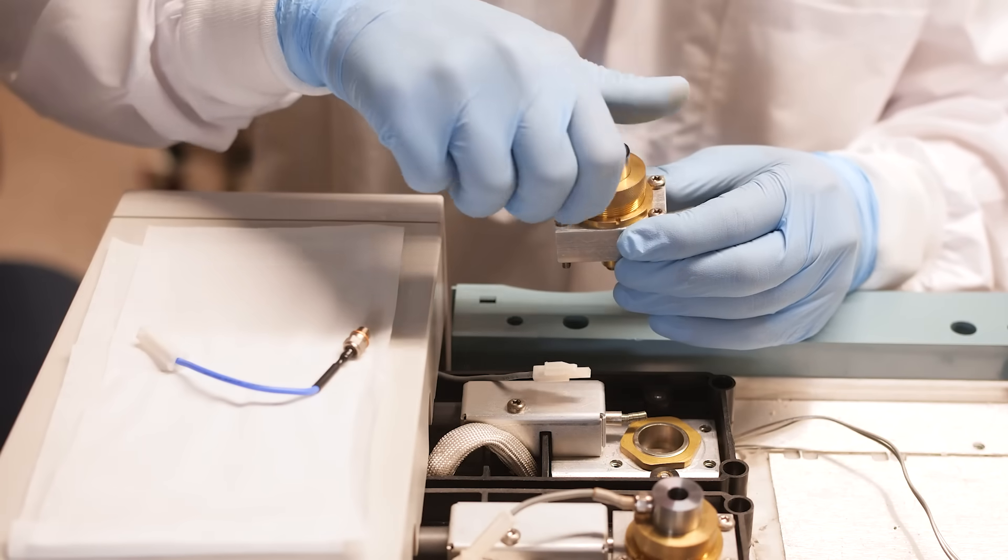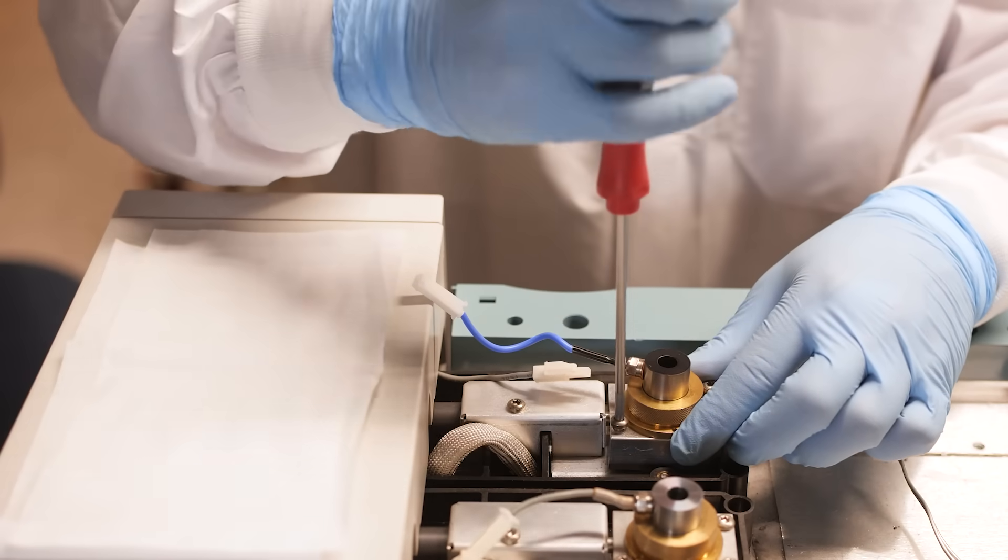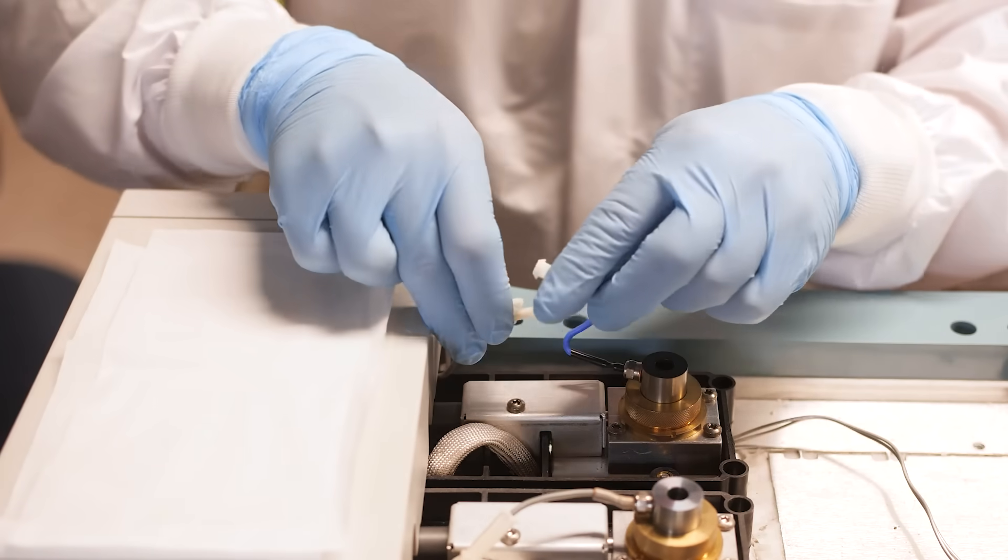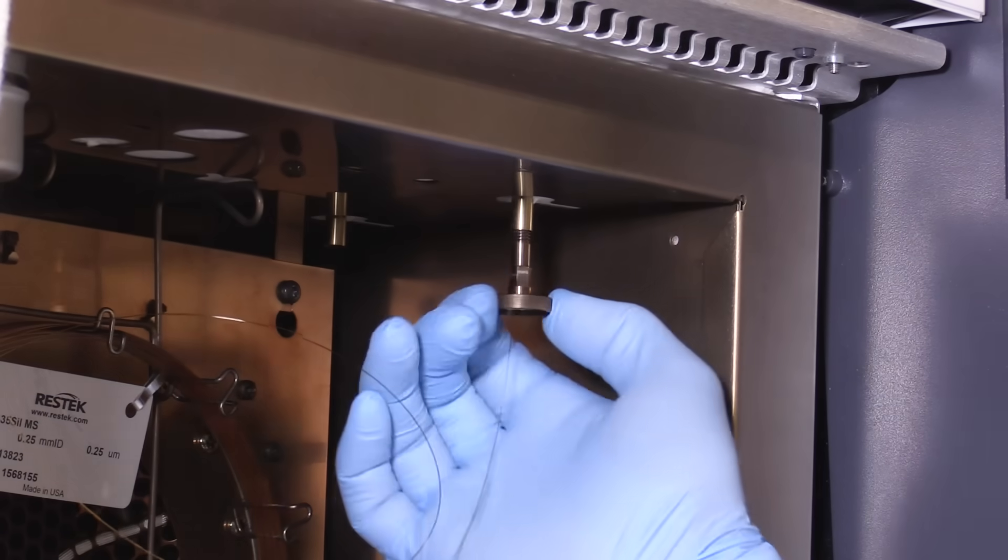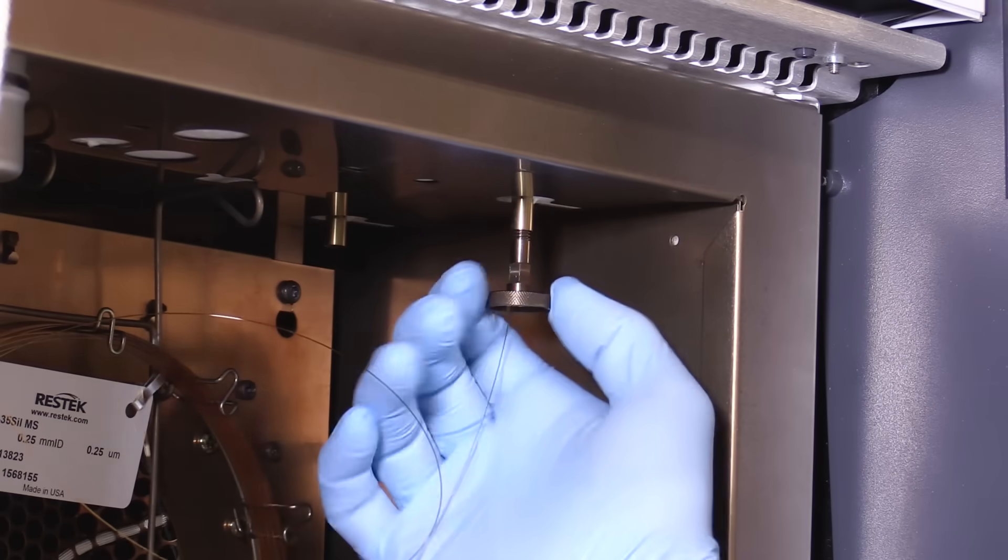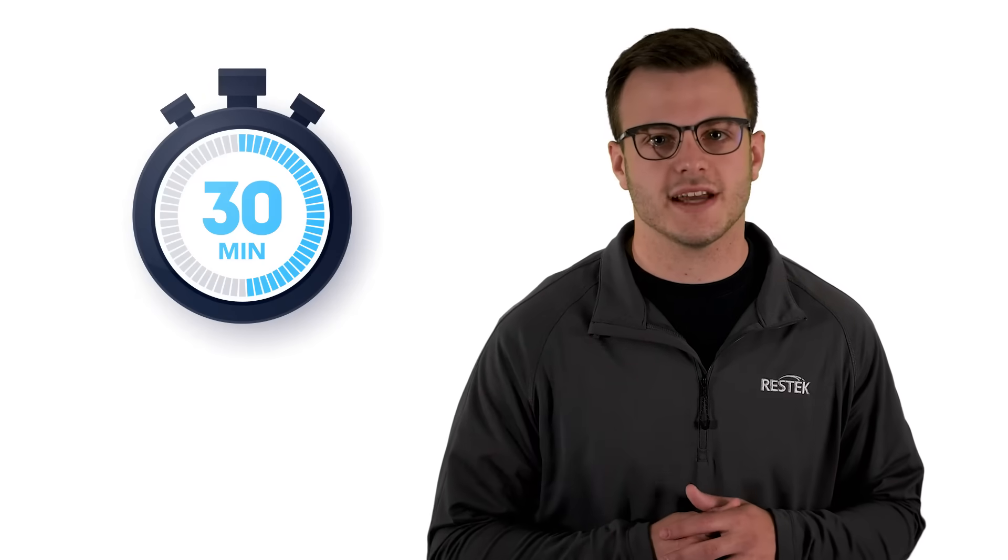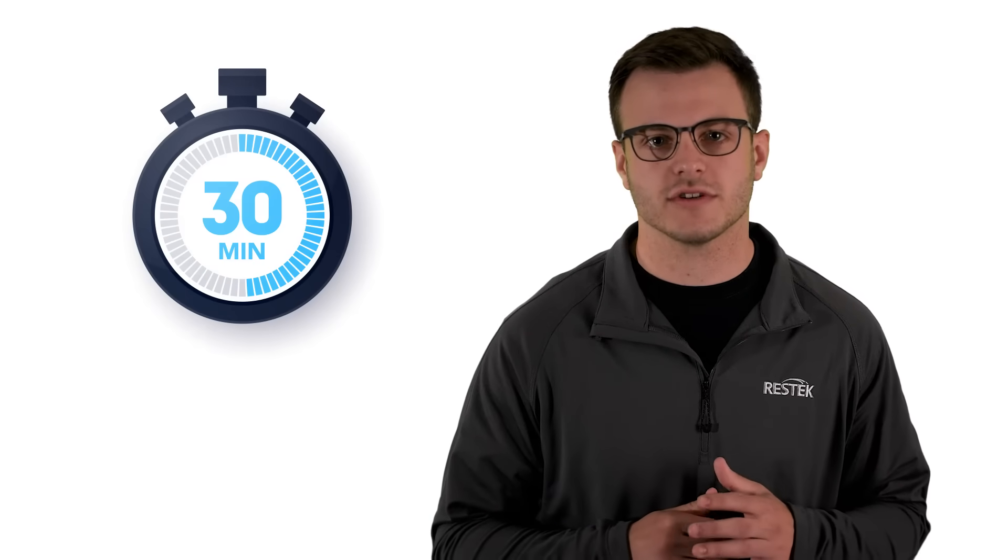Now that we have replaced these parts, reattach the FID body to the GC and reconnect the igniter to the castle assembly. Reinstall the column and return the GC and FID to its normal running conditions. Give the FID some time to condition at temperature to help drive off any volatile contaminants.